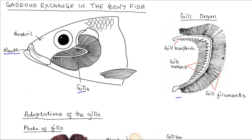A gill has the following structural features. There is a bony structure known as the gill bar or the gill arc. Arising from this gill bar are numerous thin and slender structures known as the gill filaments. These gill filaments provide the effective surface for gases exchange. Also arising from the gill bar on the opposite side to the filaments are tooth-like structures known as gill rakers. The function of these is to prevent food and any solids present in the water from reaching and damaging the delicate filaments.